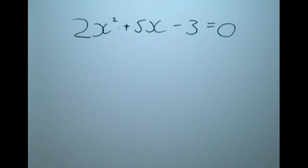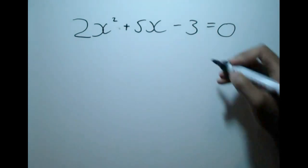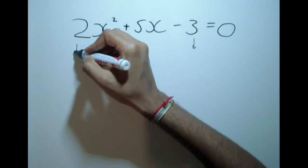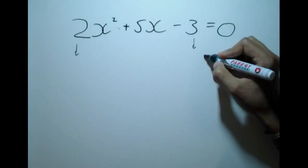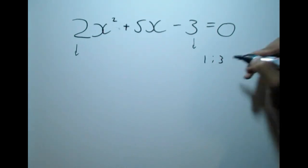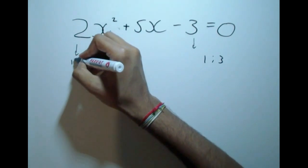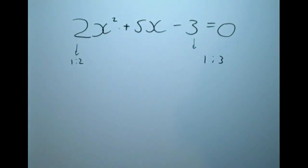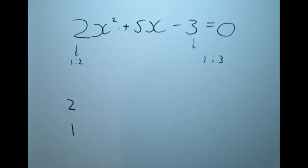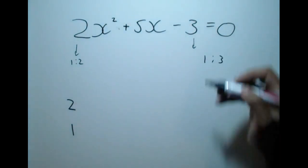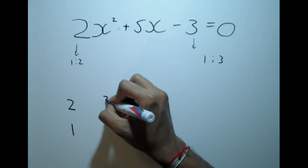Consider the following quadratic: 2x squared plus 5x minus 3. We are going to look at the factor combinations for 3 and for 2. The factor pairs for 3 are only 1 and 3, and the pairs for 2 are only 1 and 2. So in a column I will write a factor combination of 2 — that is 2 and 1 — and a factor combination of 3 — that is 3 and 1.